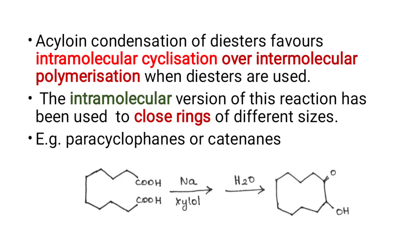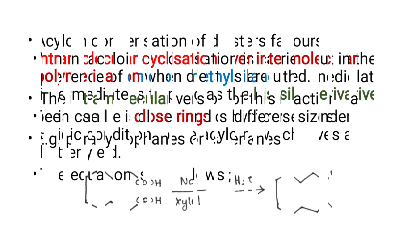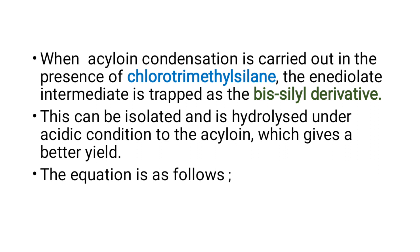Acyloin condensation using diesters generally favors intramolecular cyclization over intermolecular polymerization. When diesters are used, in the presence of molten sodium, they form an acyloin. Generally, the acyloin condensation is carried out in the presence of chlorotrimethylsilane.